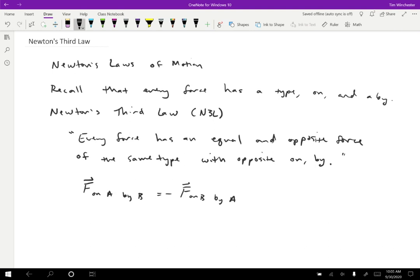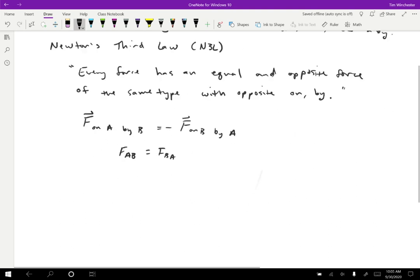And I think that this will be the clearest with a couple of examples. If we write this out with vectors, we can also write it just in terms of the magnitudes: F on A by B equals F on B by A. So let's try this out.